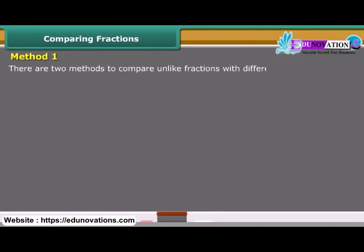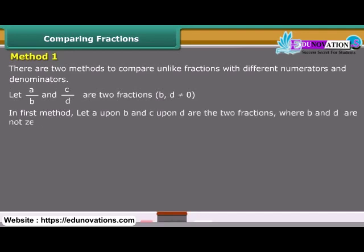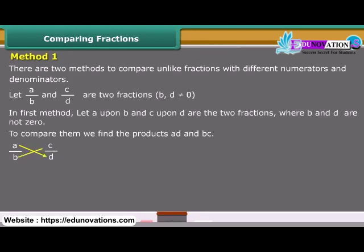Method 1: There are two methods to compare unlike fractions with different numerators and denominators. Let A upon B and C upon D be two fractions where B and D are not equal to zero. In the first method, to compare them, we find the products AD and BC.